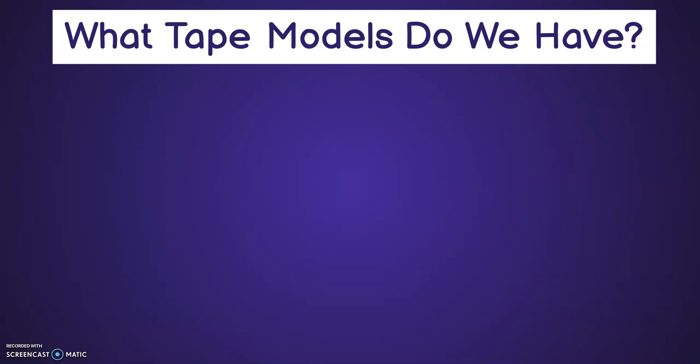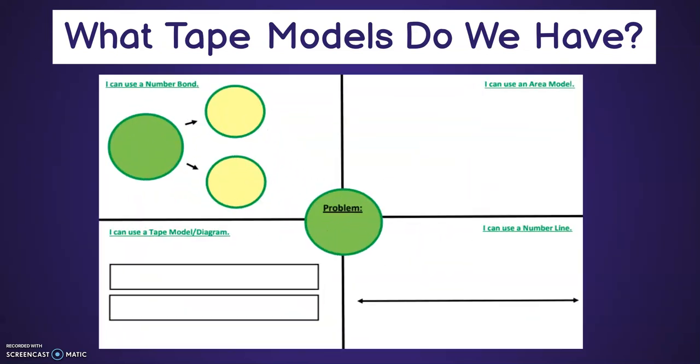Another example we have of the tape model that we can use is this document here. This document came out probably two years ago, and this is for a second and third grade age range. We have number bonds, an area model, the tape model in the bottom corner, and then the number line right to the right. So I can put one problem in the middle and students can solve that multiple ways. Again, with our other tape model, students can physically put their concrete objects right in that tape model to solve it and then draw a picture to record their thinking.